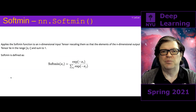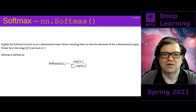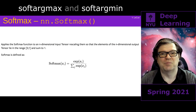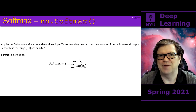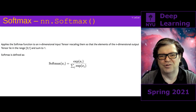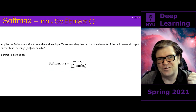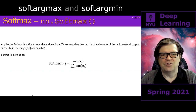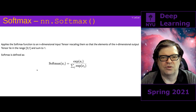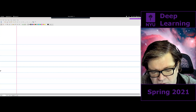Now we're moving to modules that turn a vector into another vector: softmax and softmin. They should really be called soft-argmax and soft-argmin, but the names stuck. The inventor, John Bridle, regretted calling them softmax and softmin — he said he should have called them argmax and argmin. They're vector functions, and softmax and softmin are really the same function except one has a minus sign.